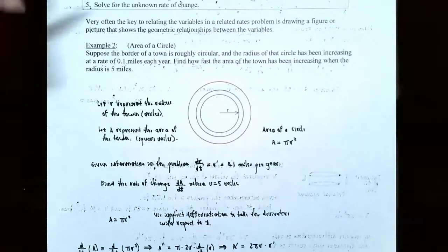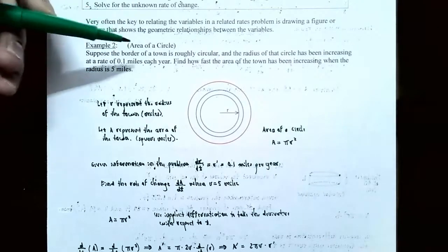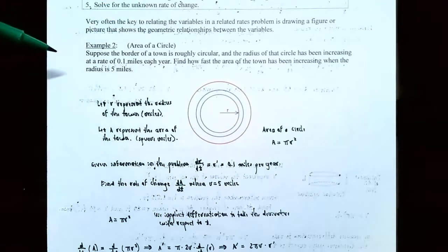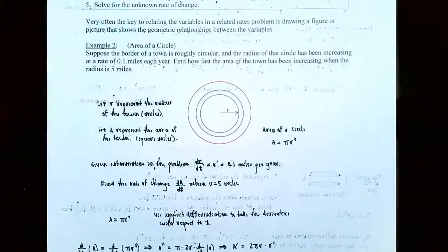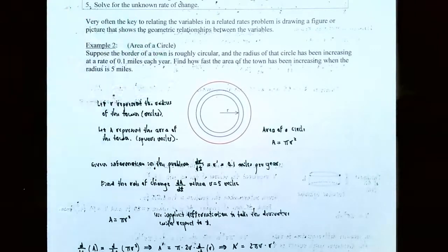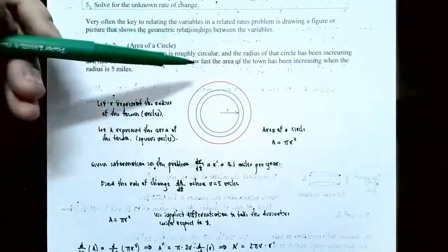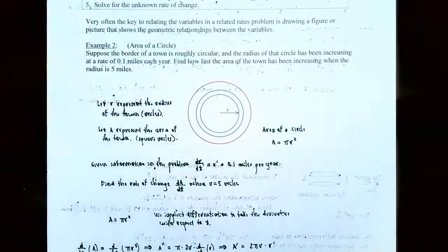Example two: area of a circle. Suppose the border of a town is roughly circular, and the radius of that circle has been increasing at a rate of 0.1 miles each year — the town is expanding. Find how fast the area of the town has been increasing when the radius is five miles. The radius of the circle is changing and the area of the circle is changing, so those are the variables.